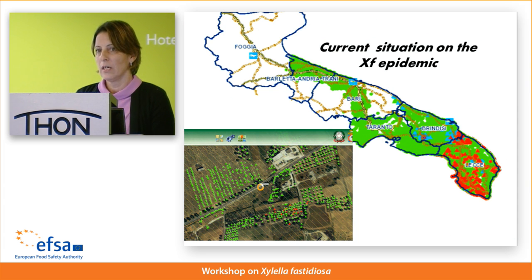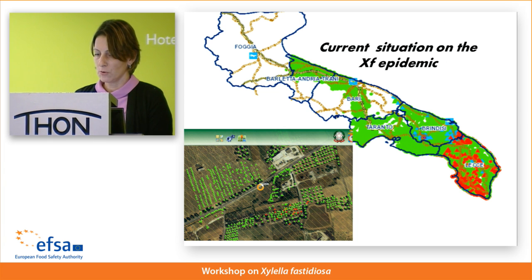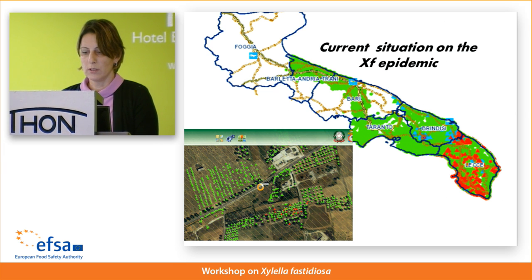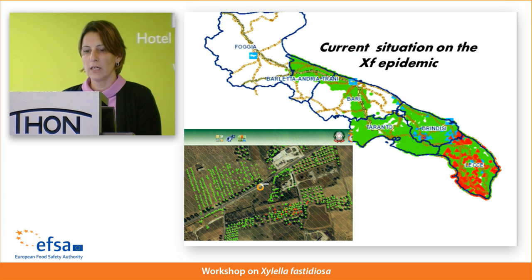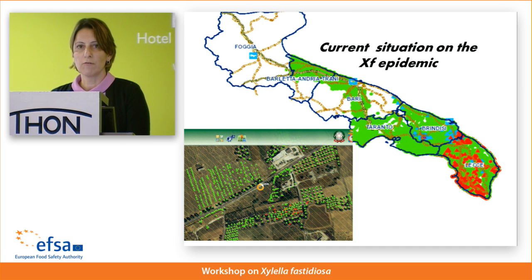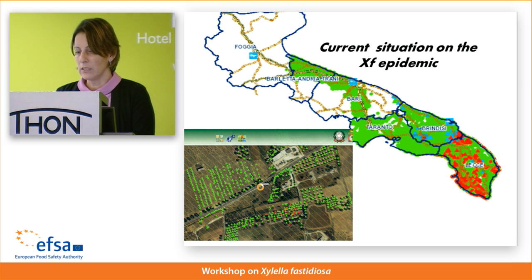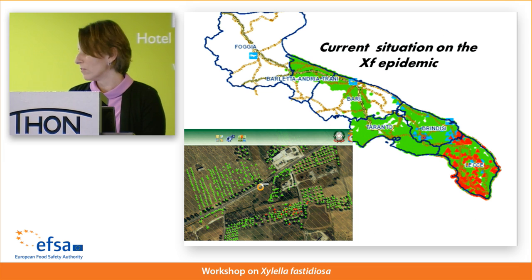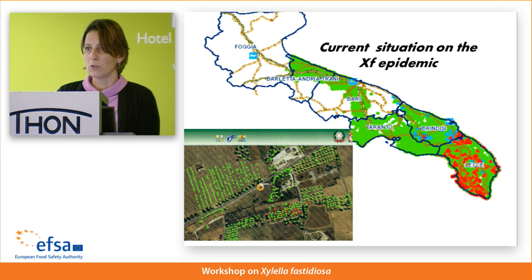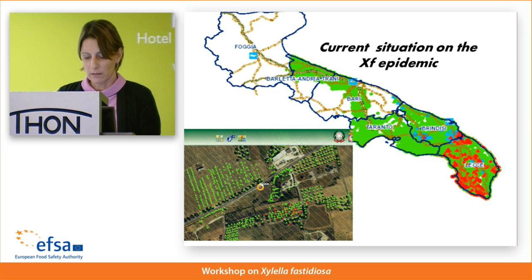This map shows the current situation of the outbreak. The green areas correspond to areas that have been surveyed and sampled with negative laboratory tests. The red spots indicate sites where infected trees have been found. As was remarked this morning, the infection is progressing towards north, into the province of Brindisi — across the border of the province of Lecce.